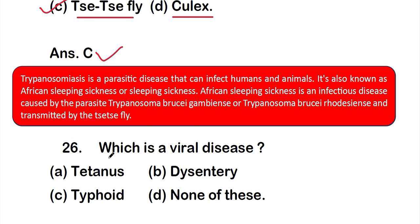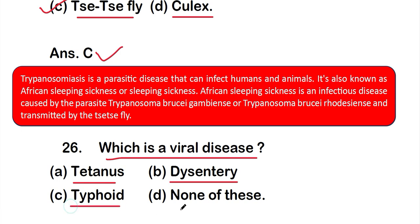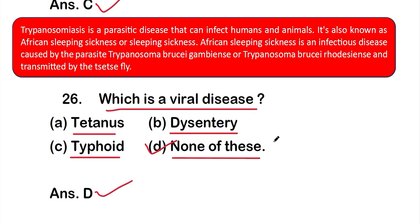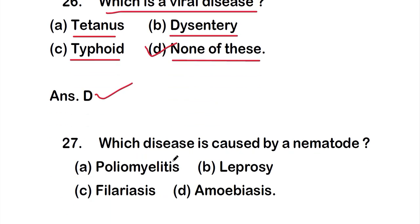Question number 26: Which is a viral disease? Options are — Option A: tetanus, Option B: dysentery, Option C: typhoid, or Option D: none of these. The right answer is Option D, none of these. Tetanus, dysentery, and typhoid are none of them viral diseases.